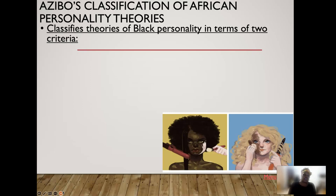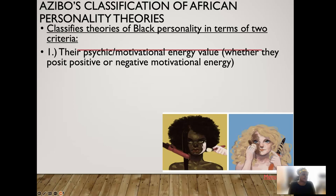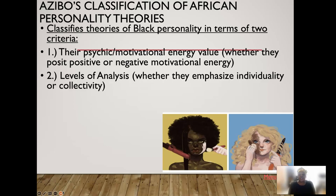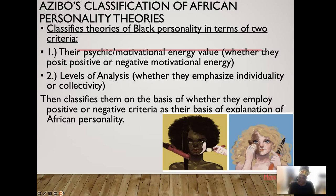Azibo classified theories of Black personality in terms of two specific criteria: one, their psychic motivational energy, which could have been either positive or negative, and two, their level of analysis — whether they emphasize individuality or collectivity.